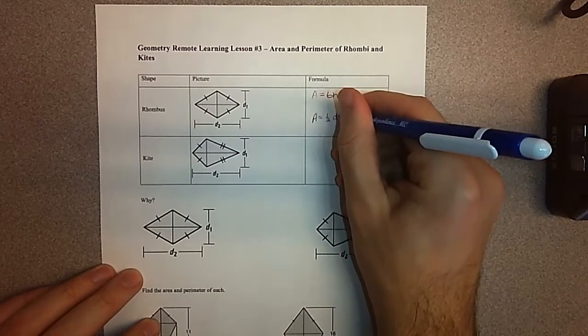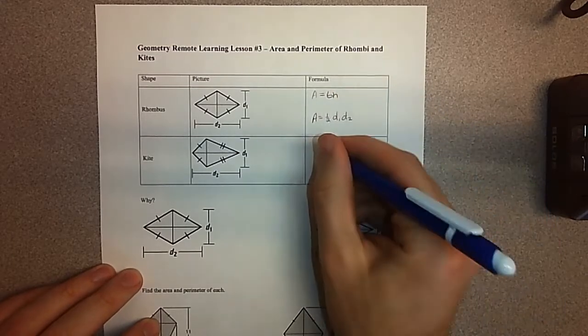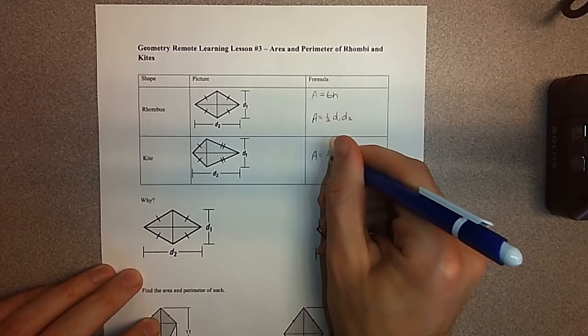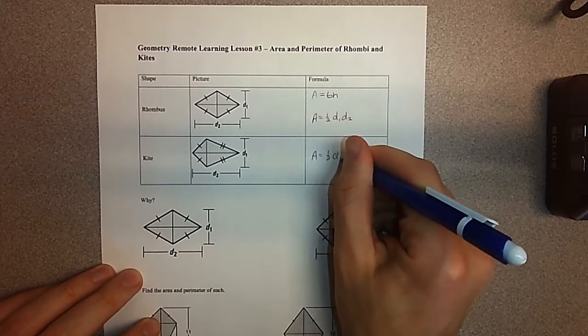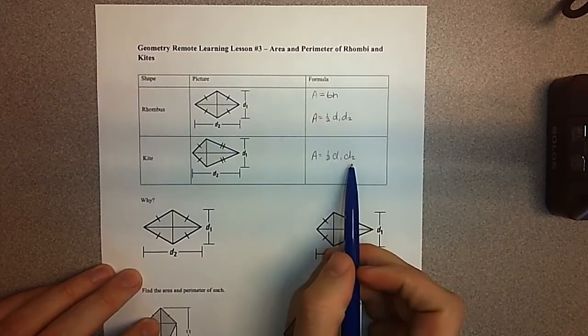And I pair it with kites because the kite, as you can probably guess by now, has the same formula. Area equals one-half times diagonal one times diagonal two.